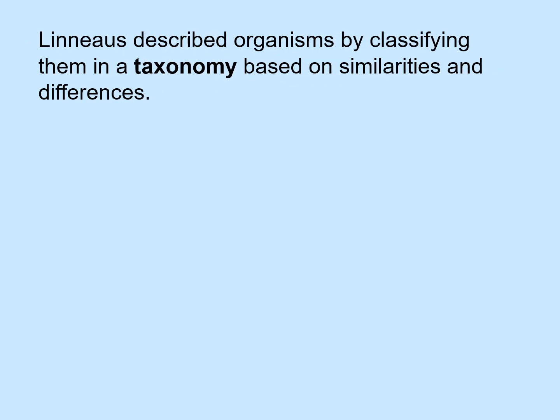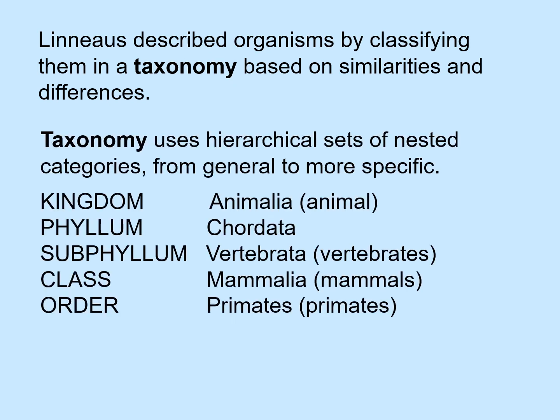Linnaeus described organisms by classifying them in a taxonomy based on similarities and differences. Taxonomy uses hierarchical sets of nested categories, from general to more specific. Starting at the most general level: animals. Within that, we belong to a group called vertebrates. We are also a type of mammal, and more specifically, we are in the primate order.